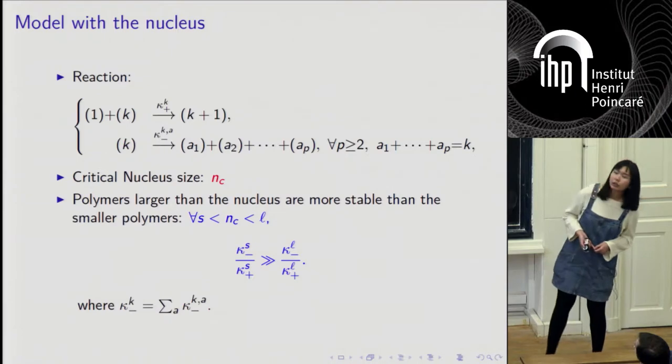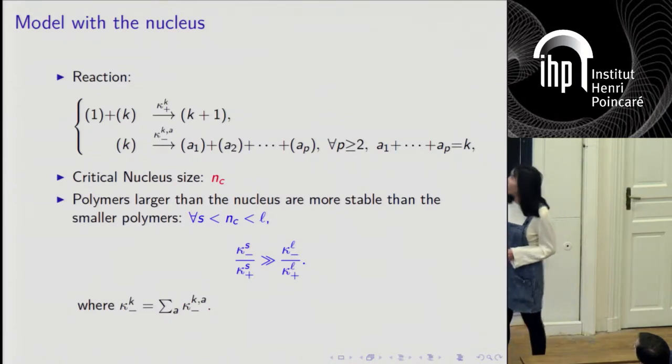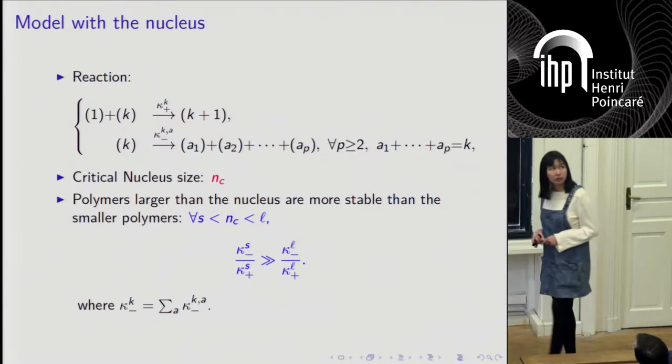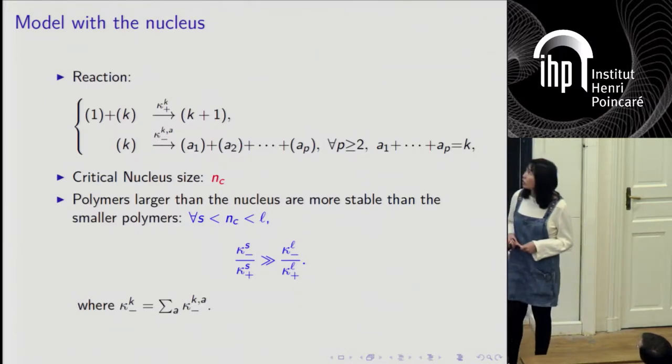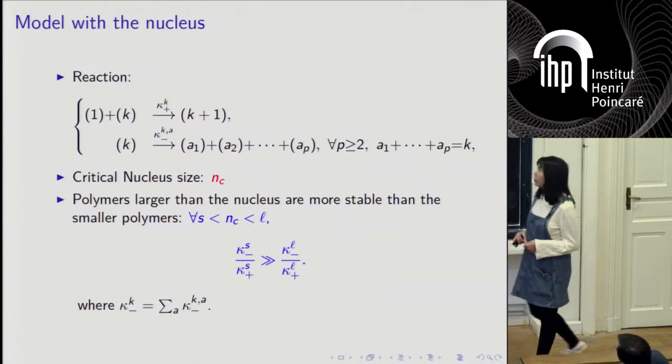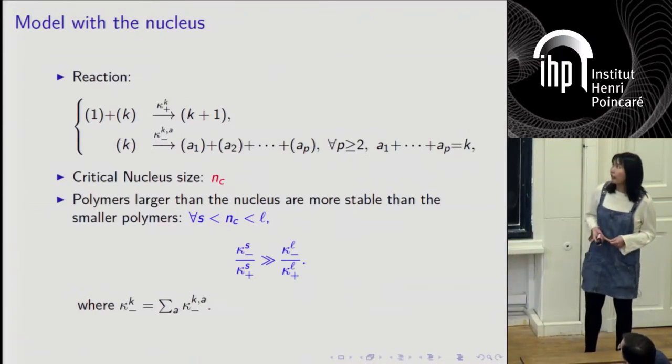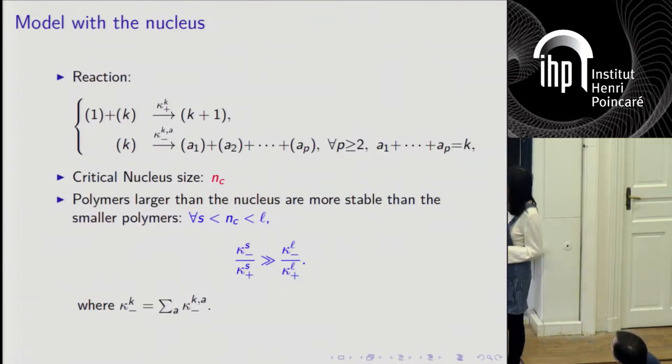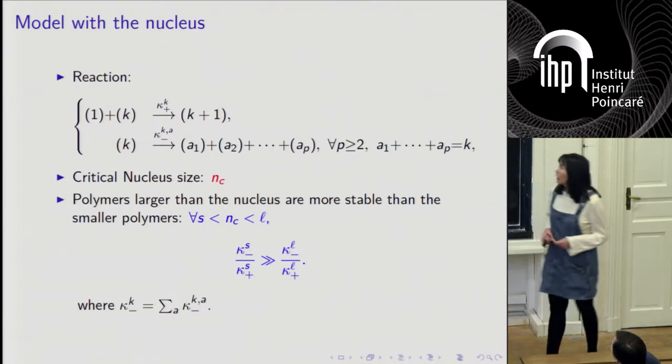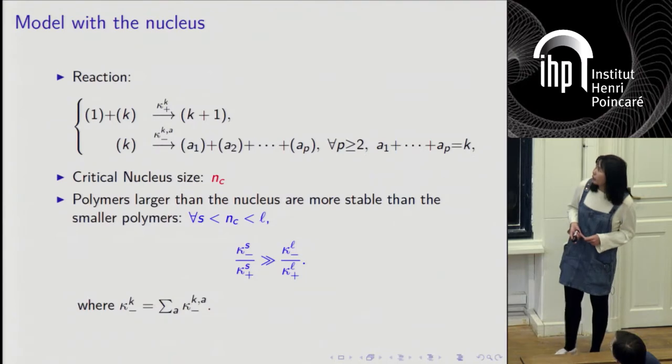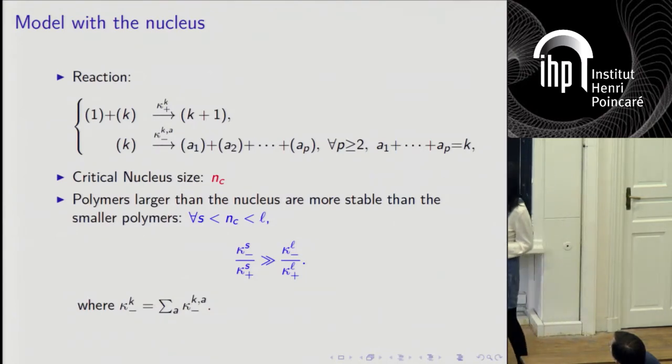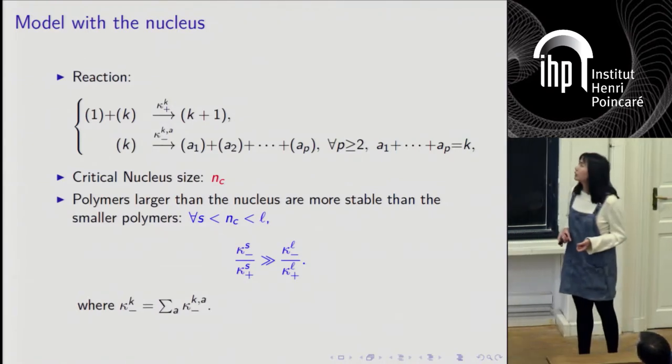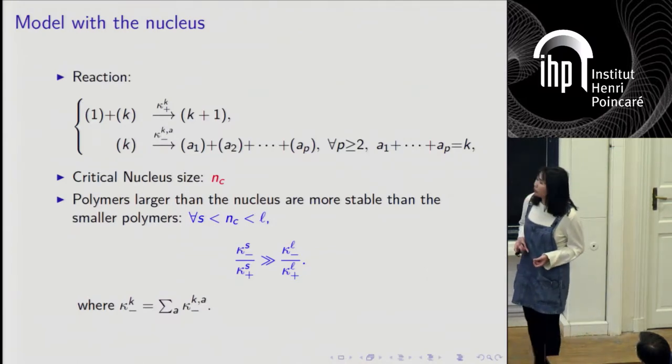We propose our model to include the assumption of nucleus. We only consider the growth by reactions with the monomers. And we consider quite a large set of fragmentations. We assume that there is a critical size nc, which is the size of the nucleus. For the polymers smaller than this size, they break down easily, which means that the ratio of the fragmentation rate over the polymerization rate is much higher for the smaller particles.